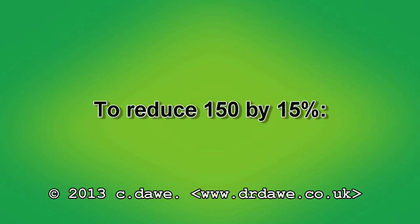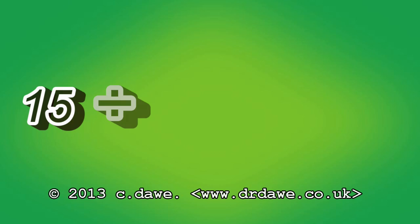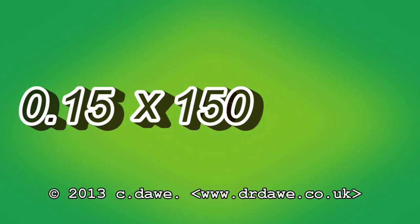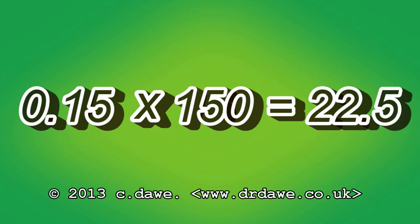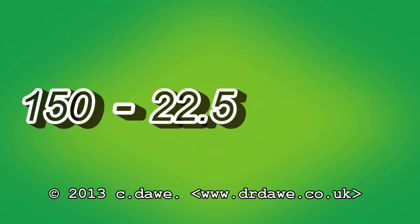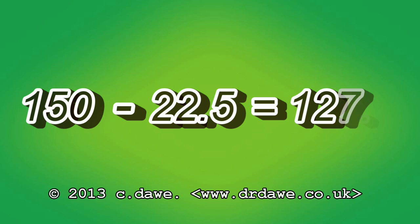To reduce 150 by 15 percent: divide 15 by 100 to get 0.15. 0.15 multiplied by 150 is 22.5. 150 minus 22.5 is 127.5.